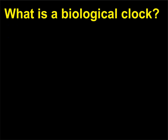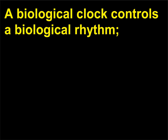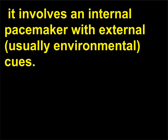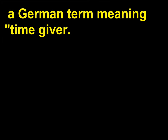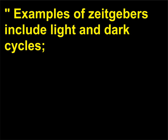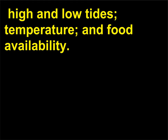What is a biological clock? A biological clock controls a biological rhythm. It involves an internal pacemaker with external — usually environmental — cues. An environmental signal that cues the clock for animals is called a Zeitgeber, a German term meaning 'time giver.' Examples of Zeitgebers include light and dark cycles, high and low tides, temperature, and food availability.